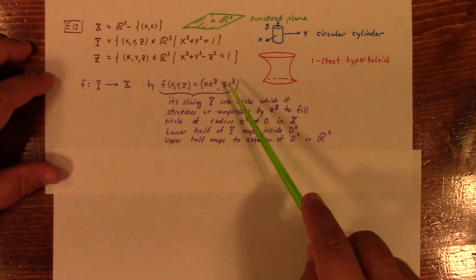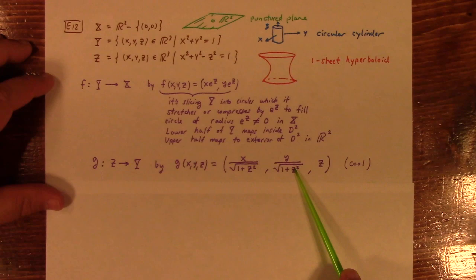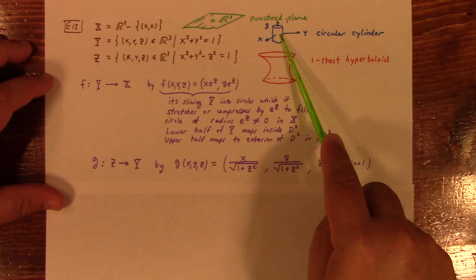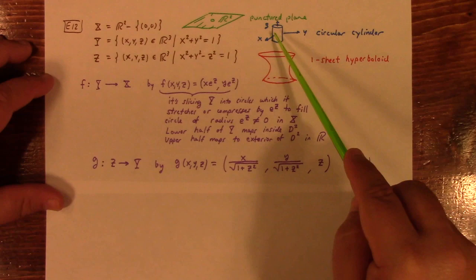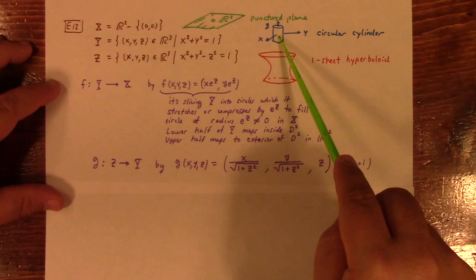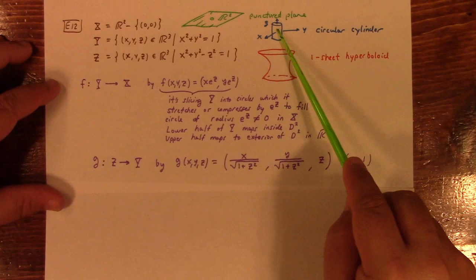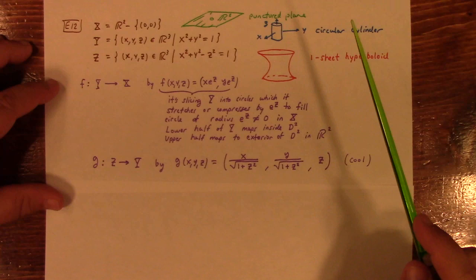And then this map down here is a mapping from the one-sheet hyperboloid to the circular cylinder, which is also a bijection. And so, if you've got a bijection from here to here and bijection from here to here, then you can likewise construct a bijection from here to here. So, these are all homeomorphic. And I don't know if you'd think that these were homeomorphic just at first glance, but they are.